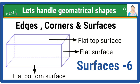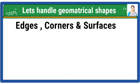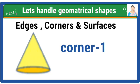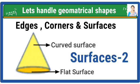A cone has 1 edge, 1 corner, and 2 surfaces: 1 flat surface and 1 curved surface.